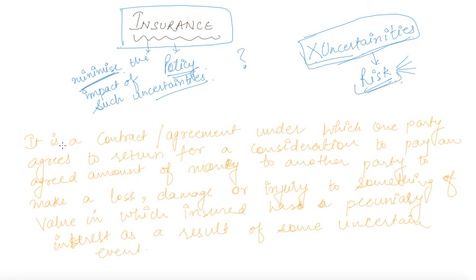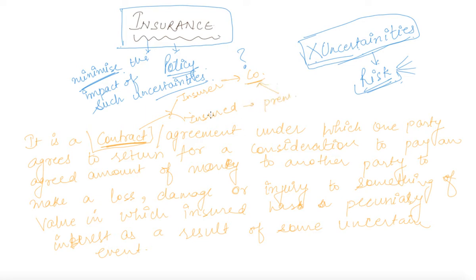Starting with the very first line — it is called a contract because there are two parties involved. The first one is the insurer and the second one is the insured. The insurer is the insurance company who provides you security. The insured is the one who is paying premium for this. For example, our family is the insured, and if we take an insurance policy from LIC, then LIC is the insurer.